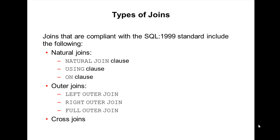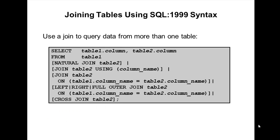Oracle supports the SQL 1999 standard. The different types of joins in Oracle are: natural join, outer join, and cross join.